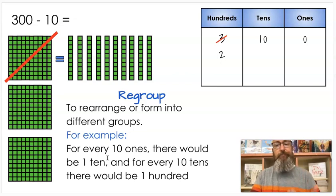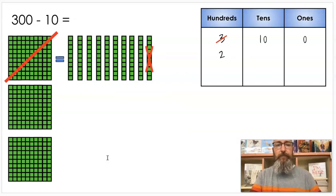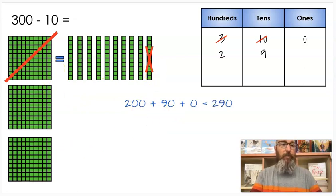But now we can take away a ten. So let's take away a ten. I crossed one out here and I have 9 left. If I cross one out here, I just took away one. So I still have 9 left. So now I have 2 hundreds, 9 tens which makes 90, and zero ones. If I add those up together, I have 200 plus 90 plus 0 which makes 290. Which means 300 minus 10 is 290.